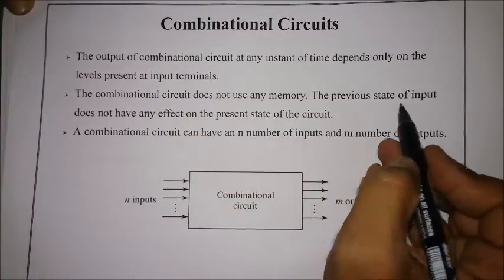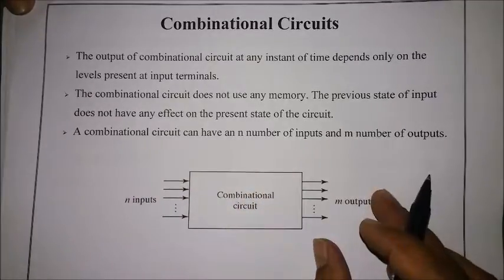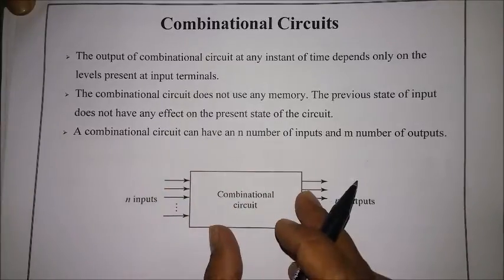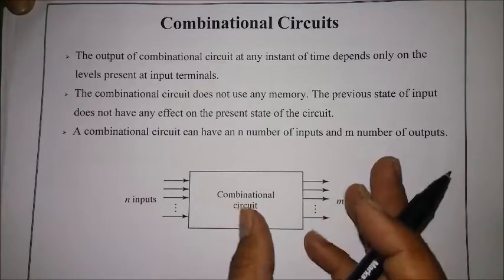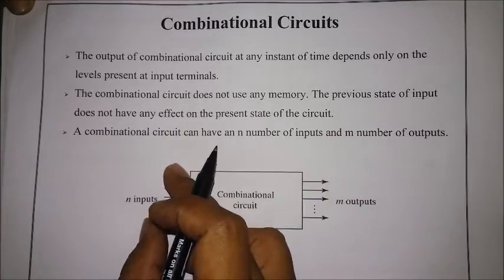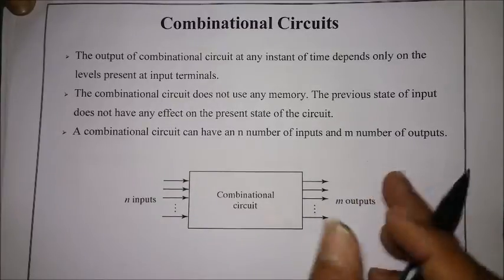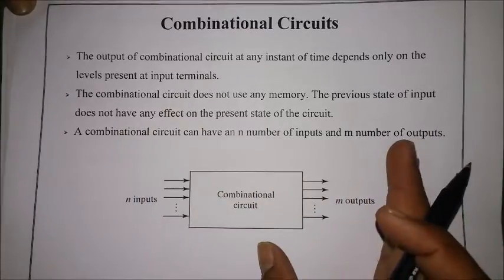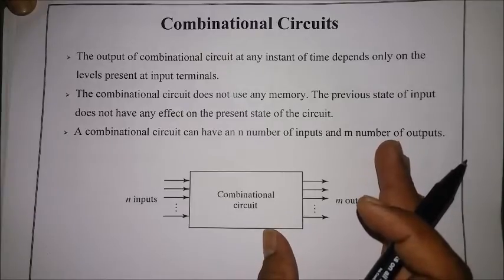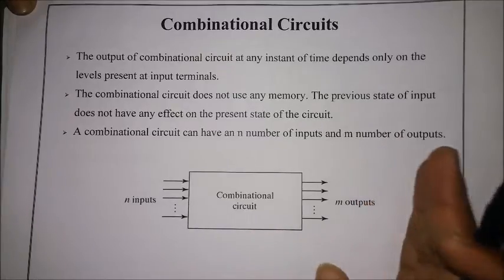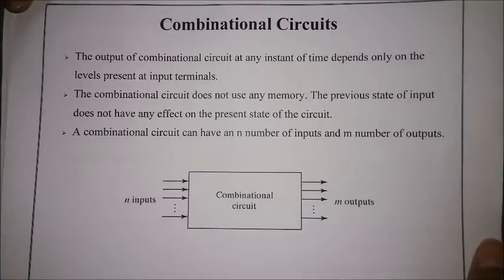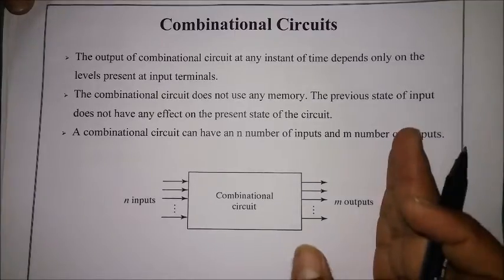The previous state of input does not have any effect on the present state of the circuit, so the output is purely dependent upon the present inputs only. If I change the input values, it will automatically affect the output. A combinational circuit can have n number of inputs and m number of outputs — there is no restriction. Having 10 inputs doesn't mean we need 10 outputs; it may have 1, 2, 3, etc.